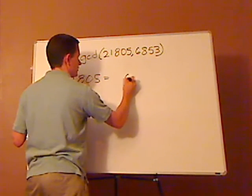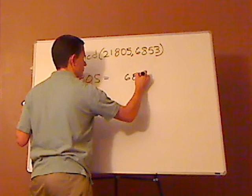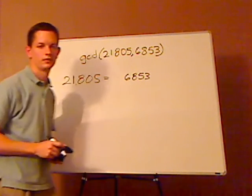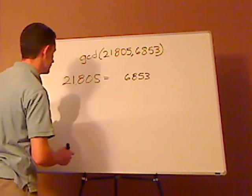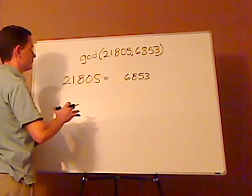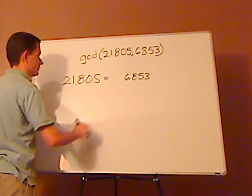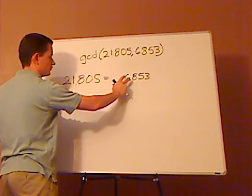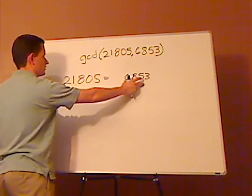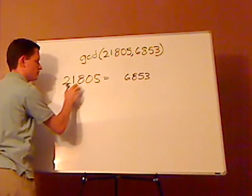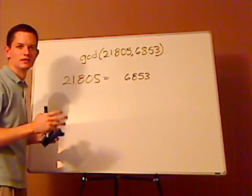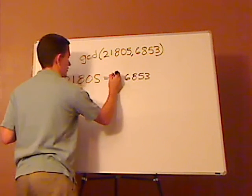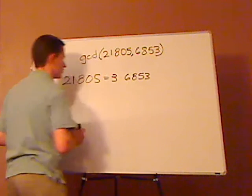you're going to see how many times does 6,853 go into this without going over. And to type in your calculator, first off, just guess. You know that this is around 7,000. 7,000 goes into 21,000 or 22,000 about three times. So you try that out.